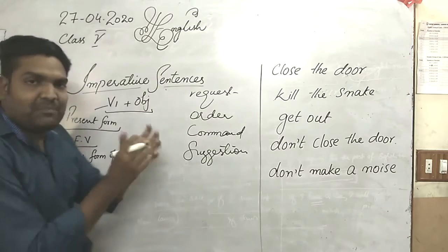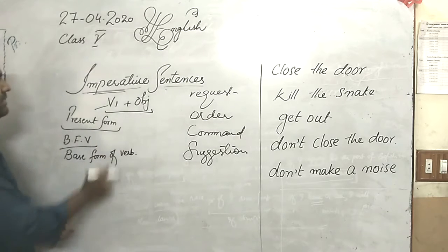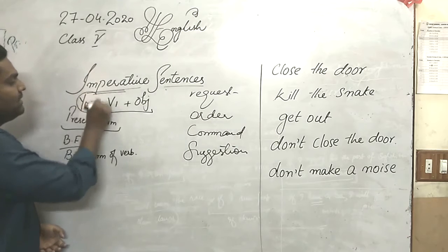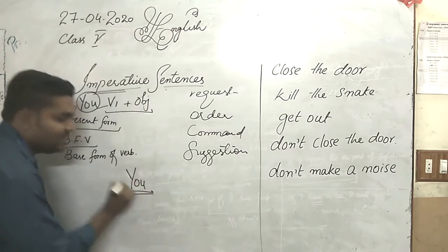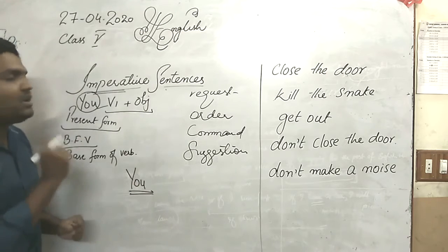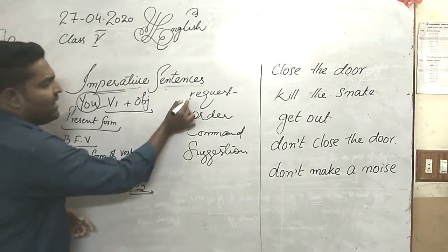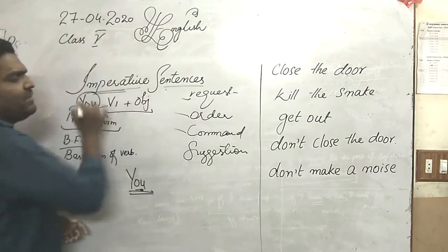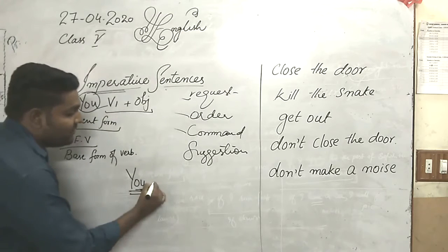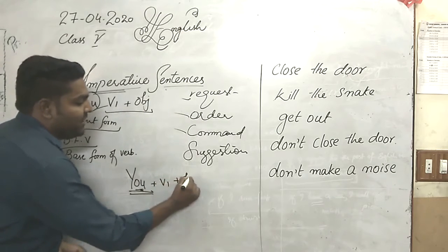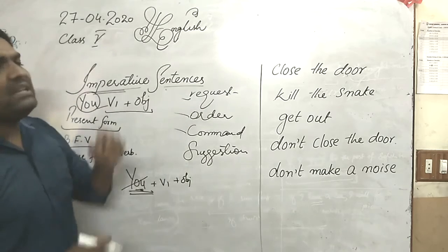Actually, the subject of the imperative sentence is obviously the second person — 'you'. That's why we do not use 'es' or 's', and we also do not mention this subject. We directly give an order, command, suggestion, or make a request. The structure is: you + first form of verb + object, but we do not mention 'you' in imperative sentences.